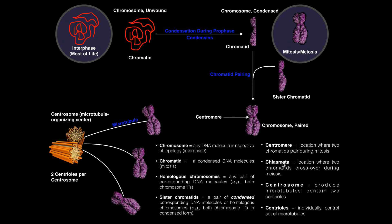Now, chiasmata. This is where two chromatids cross over during meiosis — so this is not something we see during mitosis at all. We still see a centromere during meiosis, but during meiosis this is where we actually have exchange of genetic information between the two sister chromatids. Once they pair up, they exchange genetic information between their two arms, and the point where that crossing over occurs is termed the chiasmata.